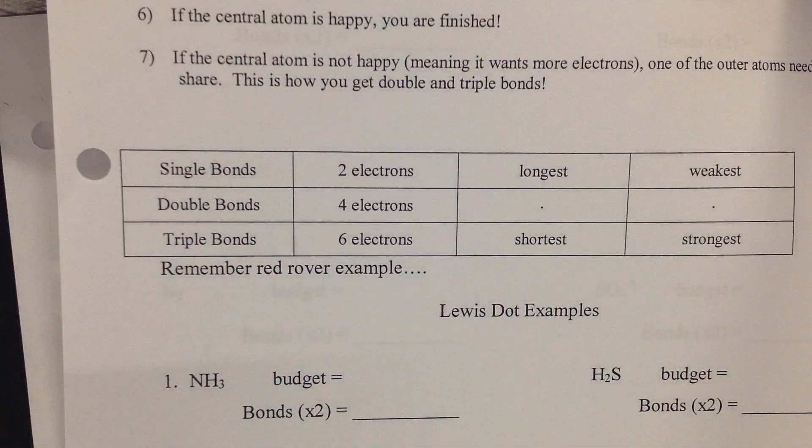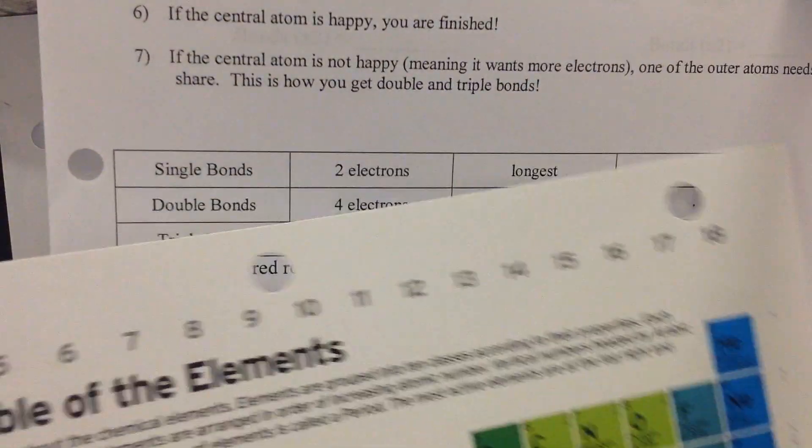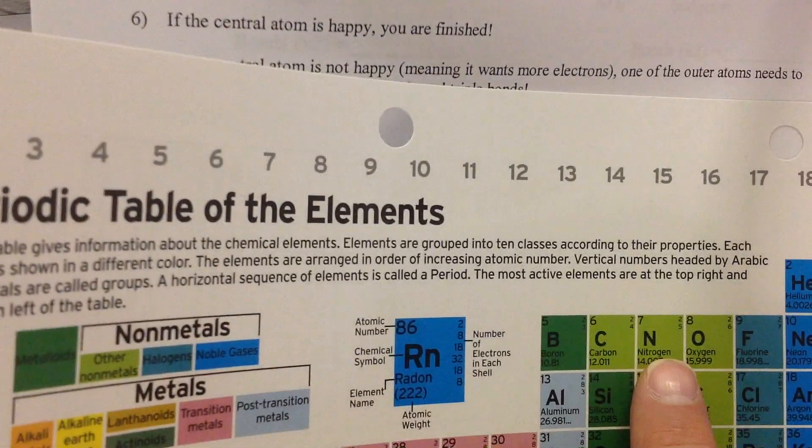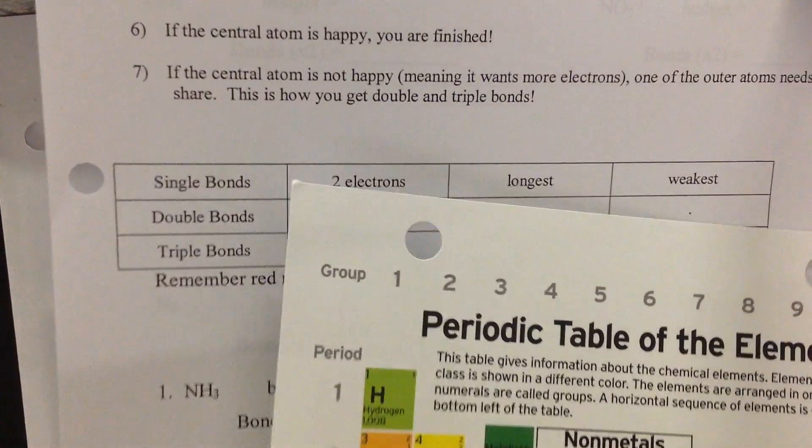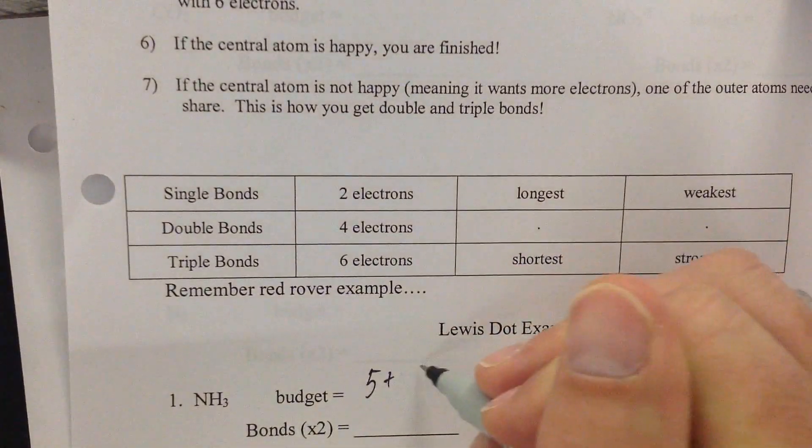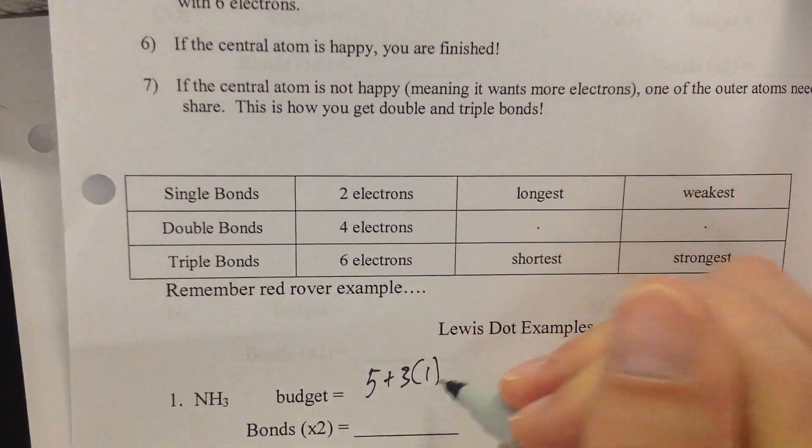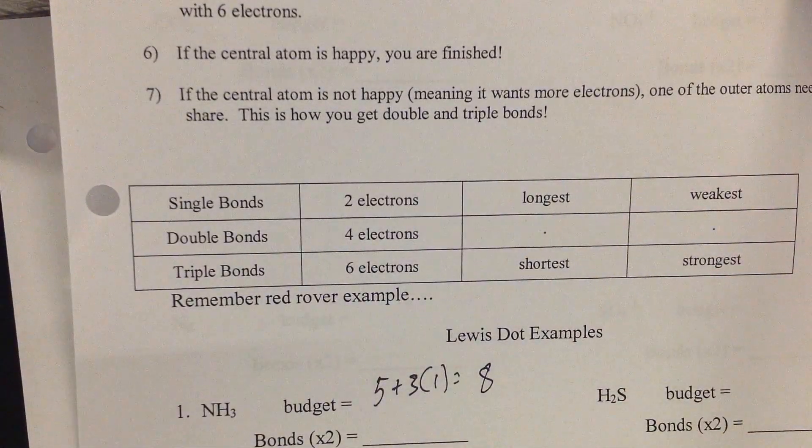What is our budget? To find our budget, we have to go to a periodic table, find nitrogen, and count over. One, two, three, four, five. So we're going to have five plus three times one, which is eight.